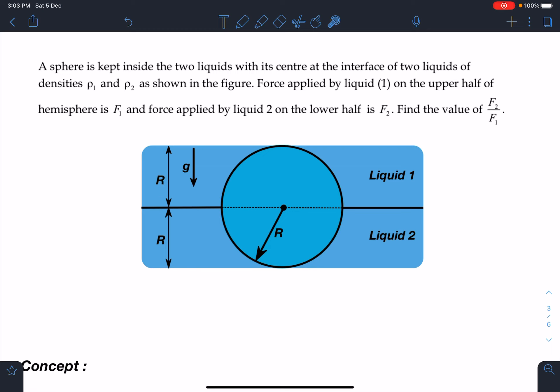Force applied by liquid 1 on the upper half of the hemisphere is F1 and force applied by liquid 2 on the lower half is F2. Find the value of F2 by F1.